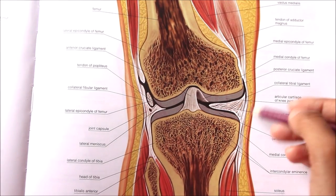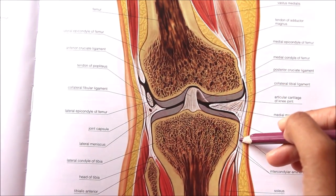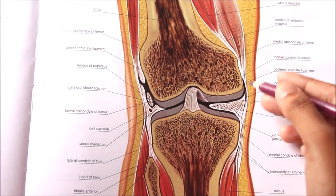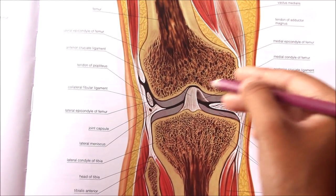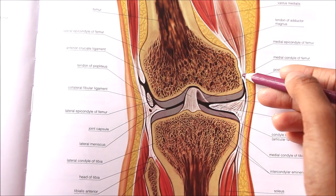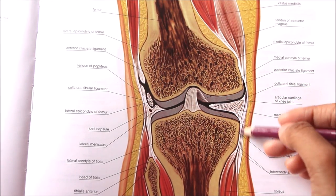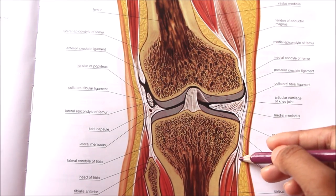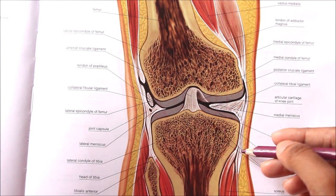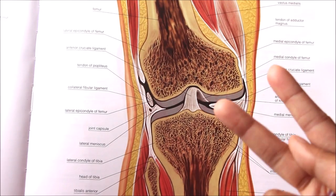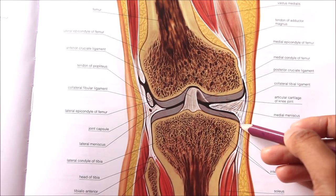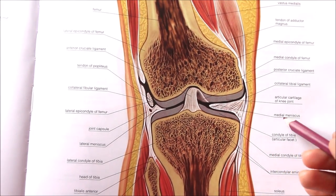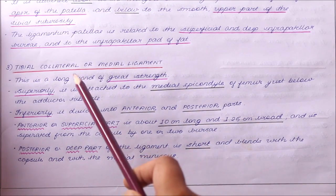The tibial collateral ligament is a long band of great strength. Superiorly it is attached to the medial epicondyle of the femur, just below the adductor tubercle. Inferiorly it divides into anterior and posterior parts. The anterior or superficial part is about 10 centimeters long and 1.25 centimeters broad, and is separated from the capsule by one or two bursae. The posterior or deep part is short and blends with the capsule and with the medial meniscus.